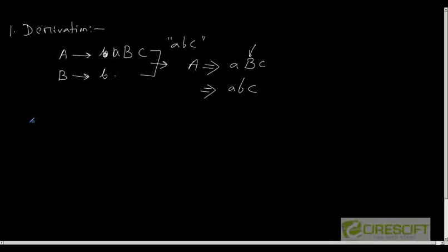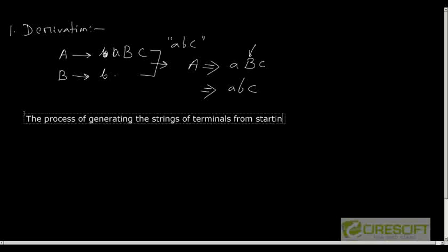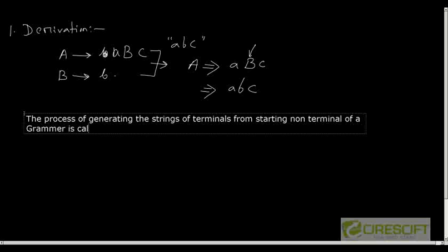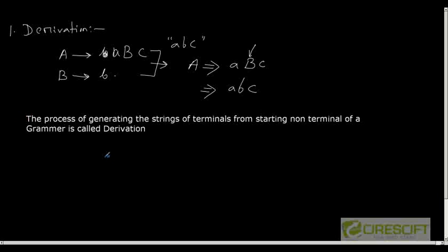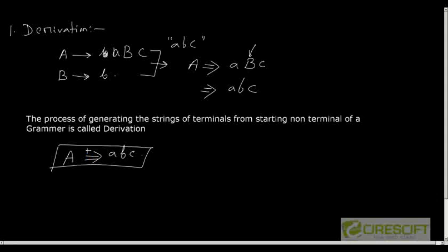So let me write it down. The process of generating the string of terminals from the starting non-terminal of a grammar is called derivation. Mathematically, we start with the starting non-terminal A and apply one or more rules to get the string ABC. This derivation can be of two types.